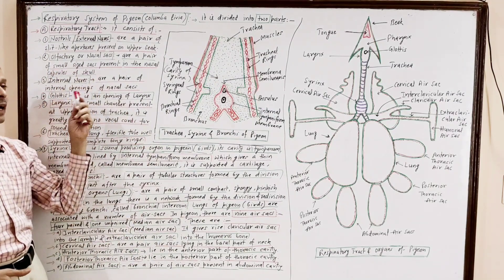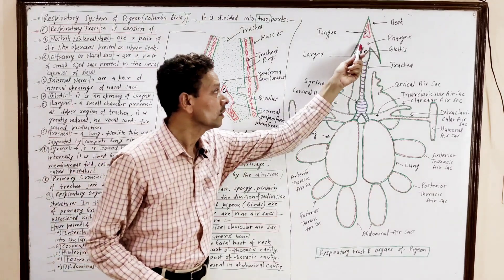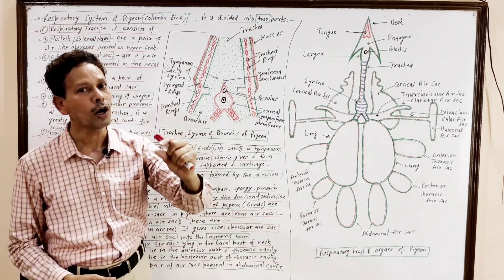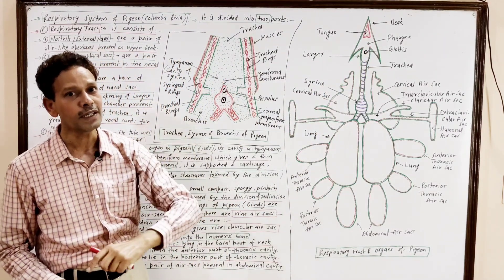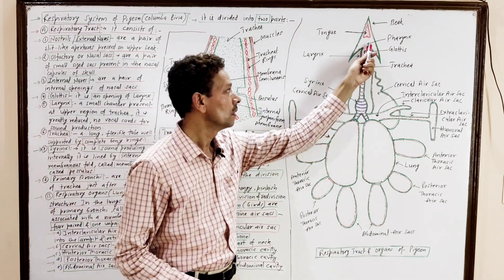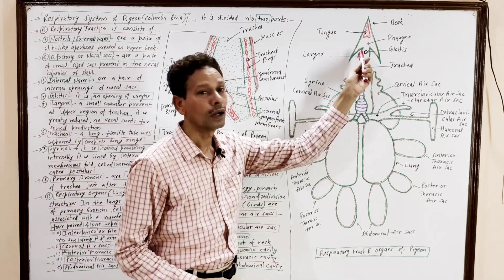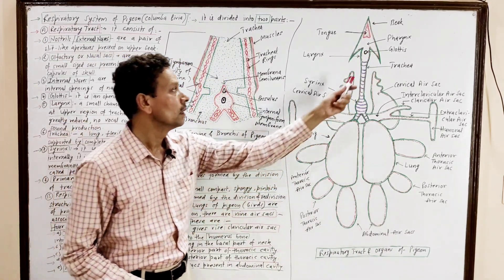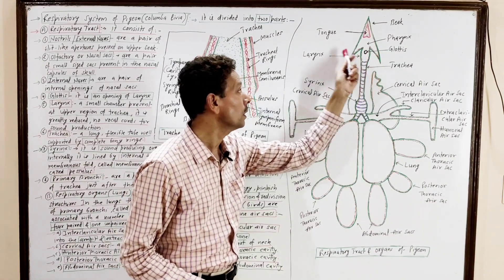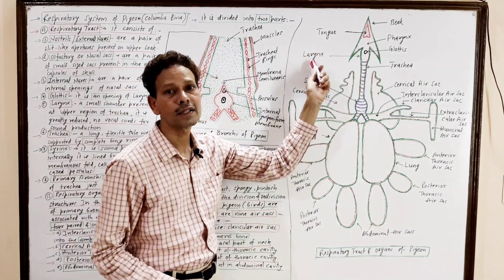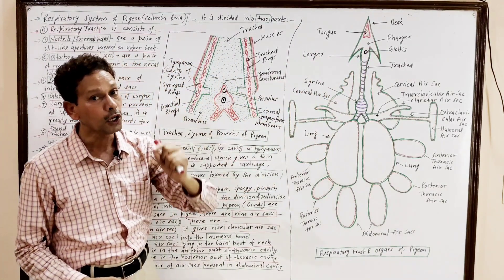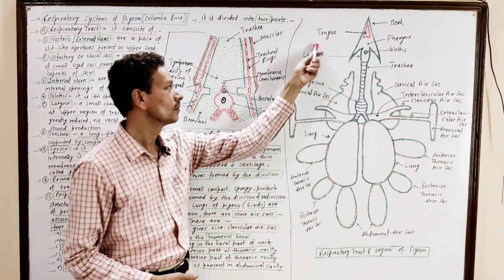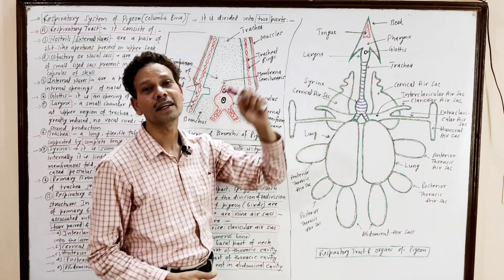The next part is the glottis. This small aperture is the glottis, which opens into the chamber called the larynx. It means the glottis is an opening of the larynx.